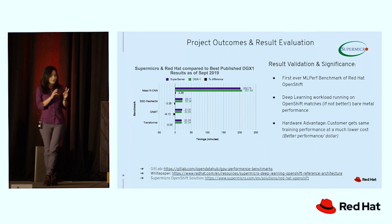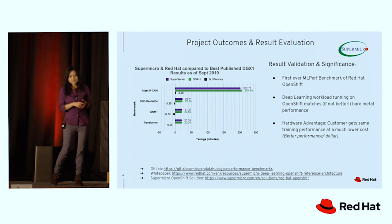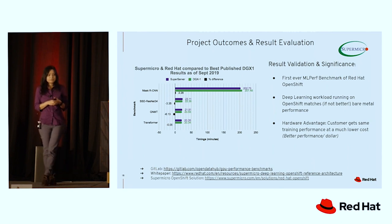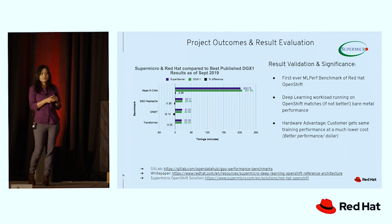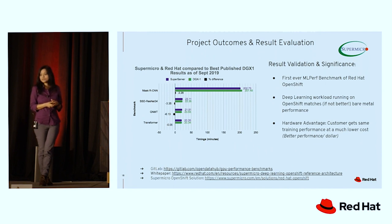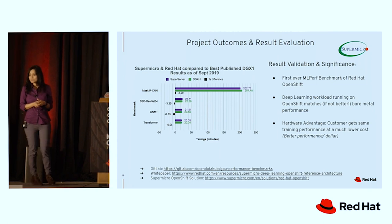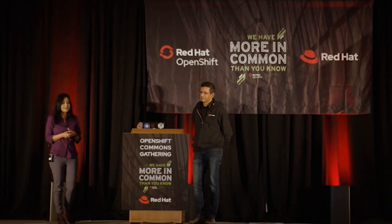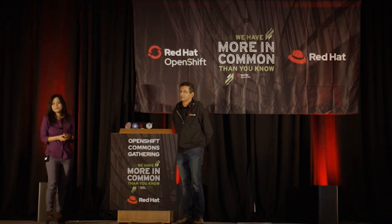Before finishing, I want to share some links. The first is the white paper jointly published by Red Hat and Supermicro, which has all the details of this project including all the numbers and hardware specs. I've also provided the Git account information where you can download all the datasets, YAML files, and everything we used. And I've linked Supermicro's OpenShift solution page for hardware stack details. Thank you everyone for your time, and thank you to Red Hat for inviting Supermicro — it's a huge opportunity and we're thrilled to be partnering with you.